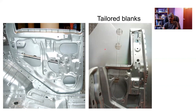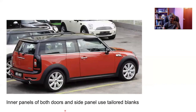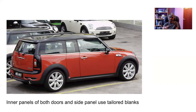This tailored blank — a bit like a patchwork — can be formed into a complex shape which goes into the inner panels of both the doors and the side panel. In order to optimize the use of materials, what you see as a very uniform body may actually consist of a whole different range of steels. Laser welding is now quite routine, so a production facility would buy the laser-welded tailored blanks and then form them into whatever shape they require.